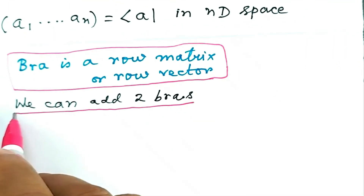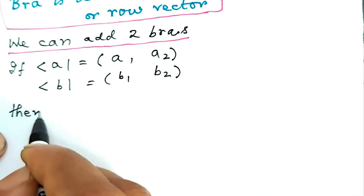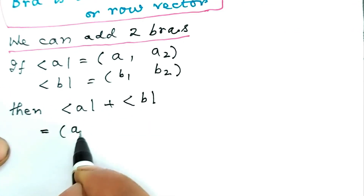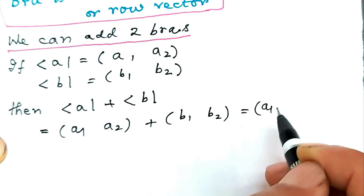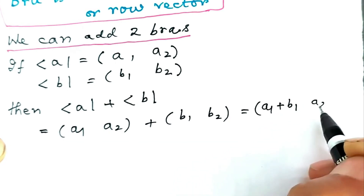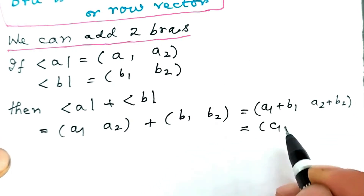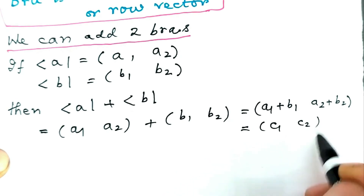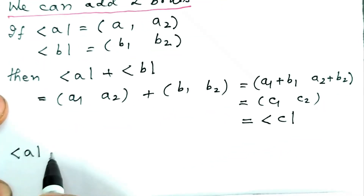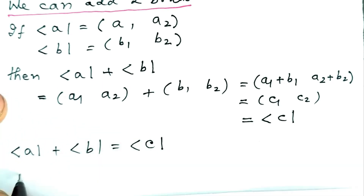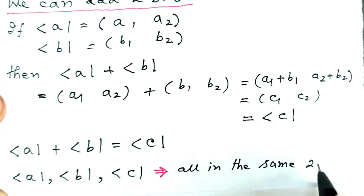We can add two Bras. If Bra A is the row matrix (A1, A2) and Bra B is the row matrix (B1, B2), then Bra A plus Bra B is the sum of the two row matrices. This leads to a new row matrix whose elements are A1+B1 and A2+B2. Defining A1+B1 as C1 and A2+B2 as C2, a new row matrix (C1, C2) is generated, which we define as Bra C. So, Bra A plus Bra B equals Bra C. We note that Bra A, Bra B, and Bra C are all members of the same 2D space.